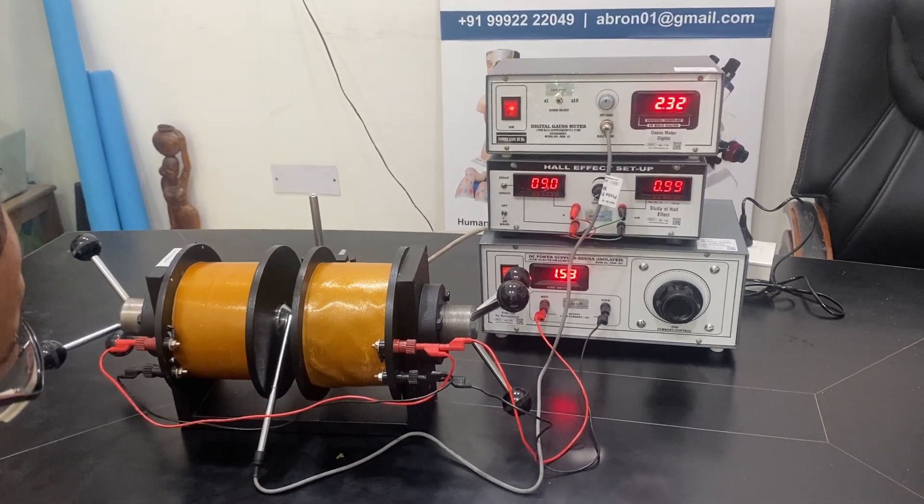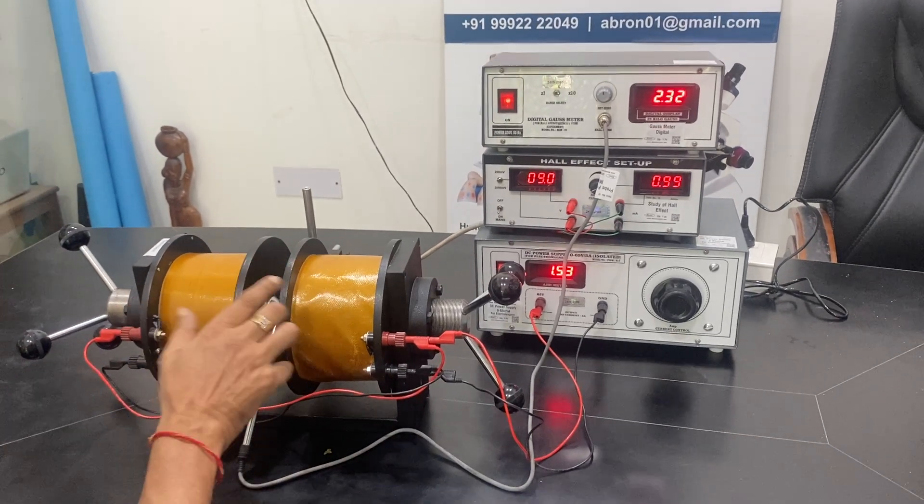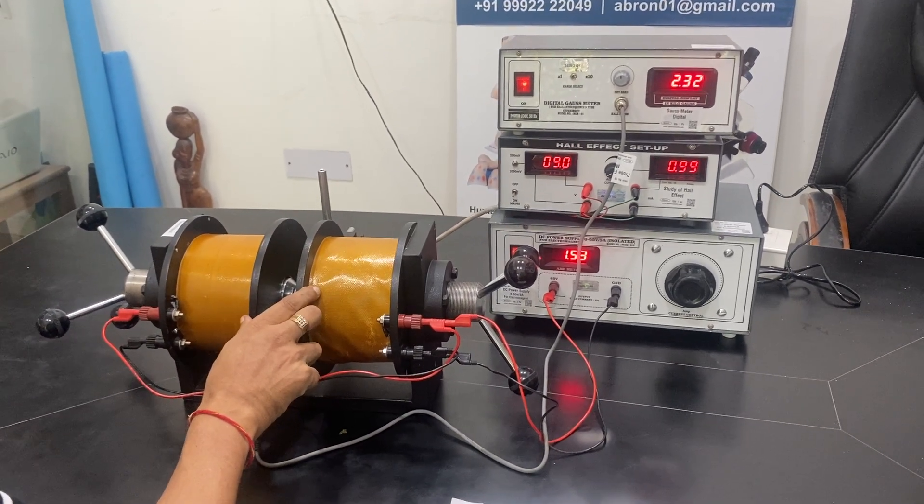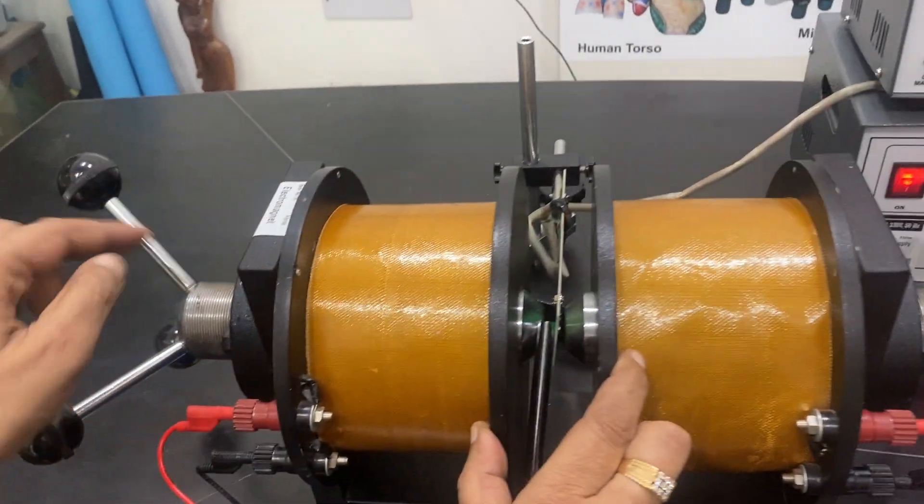Welcome to a video by Abranexports. This is Hall Probe experimental setup where we have a very heavy electromagnet. This one is an electromagnet which is almost 20 gauss or 50 gauss.